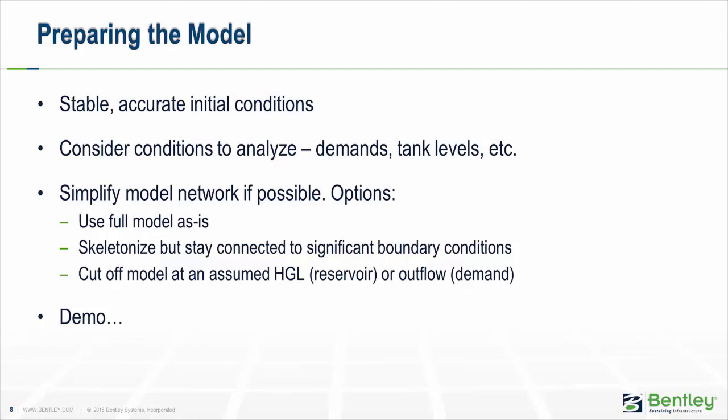If at all possible, simplify the model network. If you have a large model — maybe a city or subdivision — one option is to use the model as-is, but it's highly recommended to skeletonize it: simplify it by removing elements that may not experience bad transients and focus on the area expected to see the worst transient effects. You still want to stay connected to significant boundary conditions. Another method is to cut off the model at a certain point and insert a demand or reservoir to assume a boundary condition.